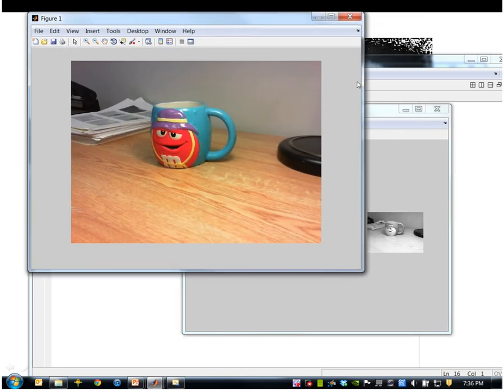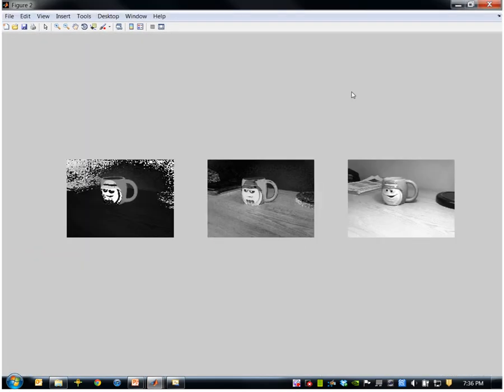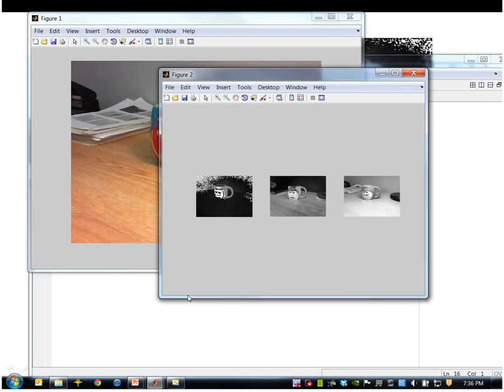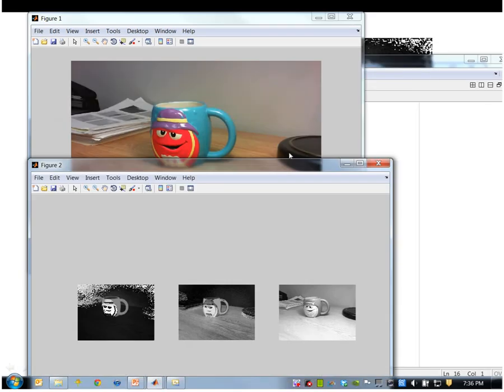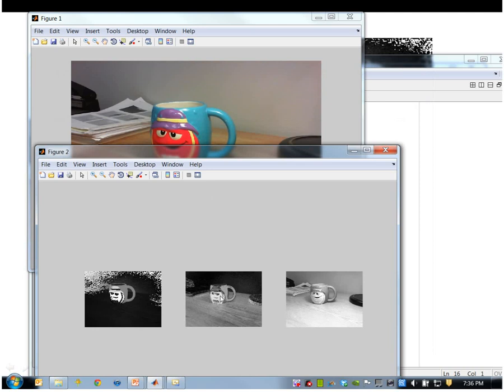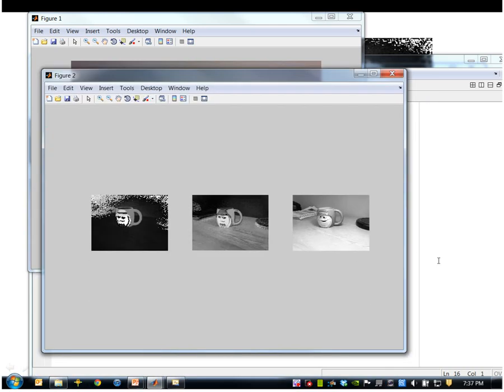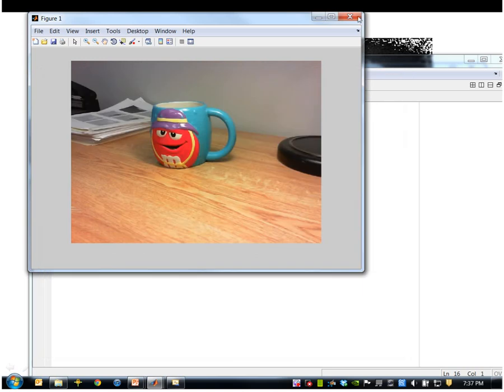There's the input RGB image and these are the three components. We've got the hue here. Looks like this red color has a very high value of hue. Then we've got saturation, and finally value.